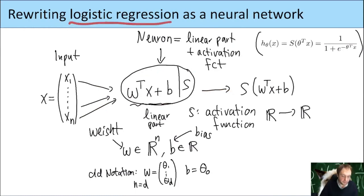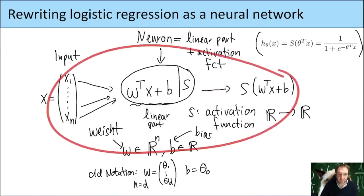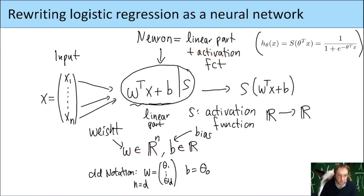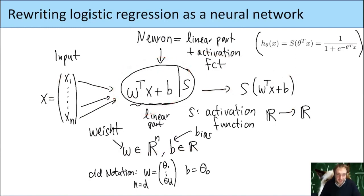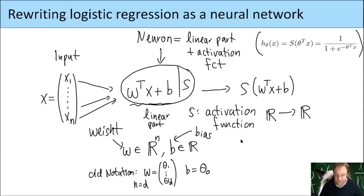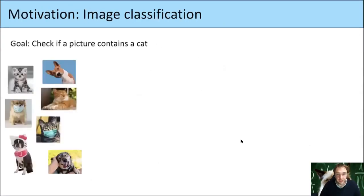So logistic regression is an example of a really simple neural network with one neuron — a linear part plus an activation function. But it's not yet clear why this is called a neural network in general, so let's make it more complicated.